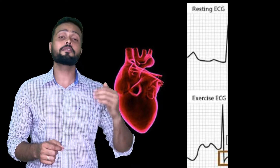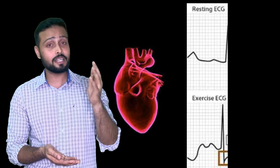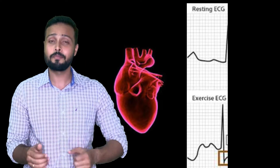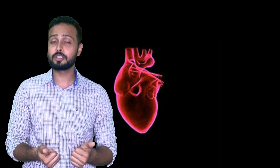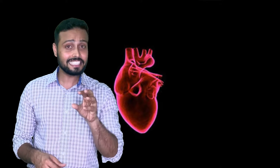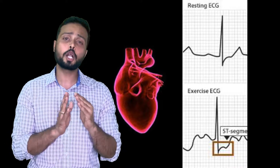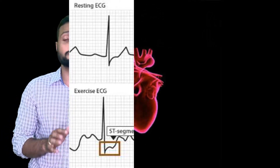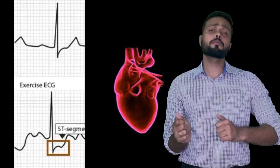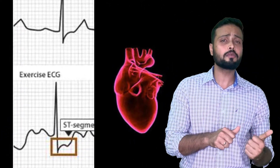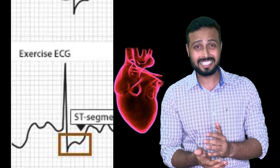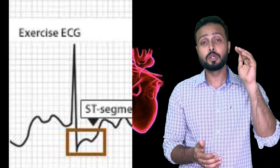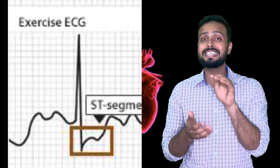Let's start with the P wave. P wave height normally increases during exercise, which is completely normal. R wave height goes down — that is also completely normal. For the ST segment, we will see a quick up-sloping during exercise, which is also considered normal. Regarding the QT interval, it decreases during exercise, and the T wave also reduces in size.